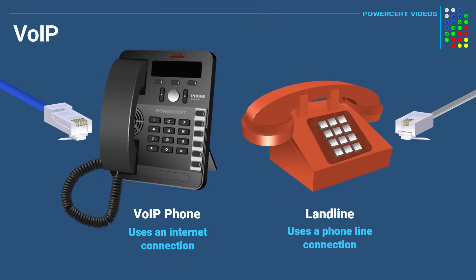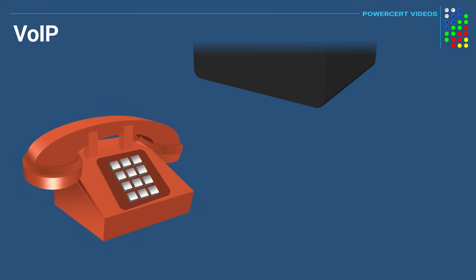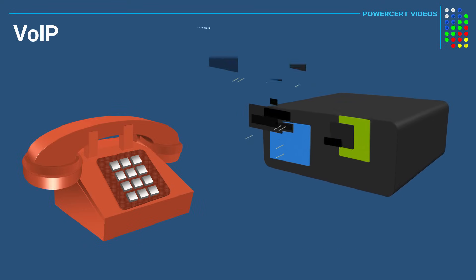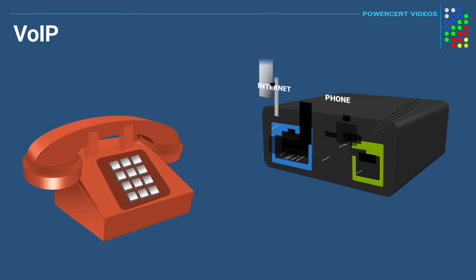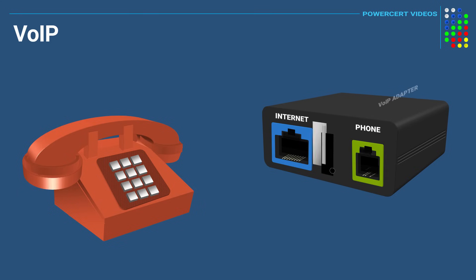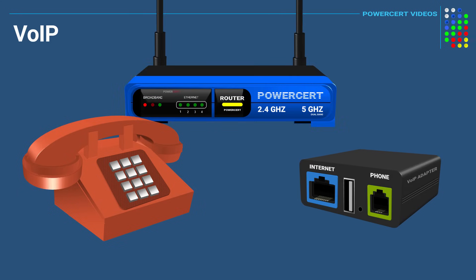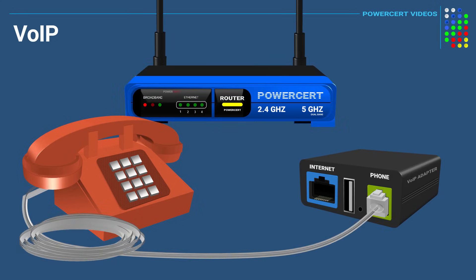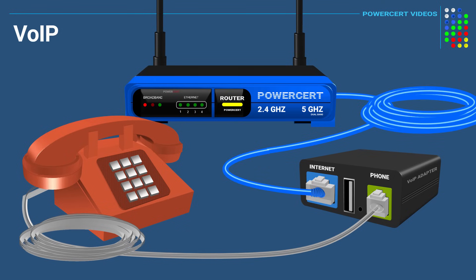Realistically, you don't need a VoIP phone because you can still use a landline, but you would have to use a special VoIP adapter. You would plug your landline into the phone port, and then from your router or switch you would plug a network cable into the internet port.